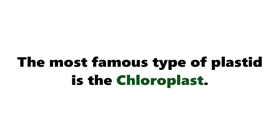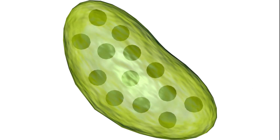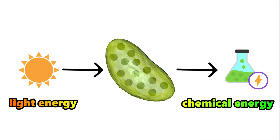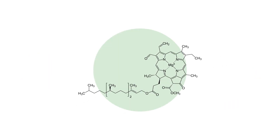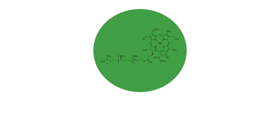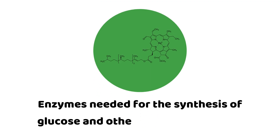The most famous type of Plastid is the chloroplast. Chloroplasts are the green pigmented organelles responsible for photosynthesis, the process that converts light energy into chemical energy. They contain chlorophyll, the green pigment that captures light energy, and enzymes needed for the synthesis of glucose and other organic molecules.